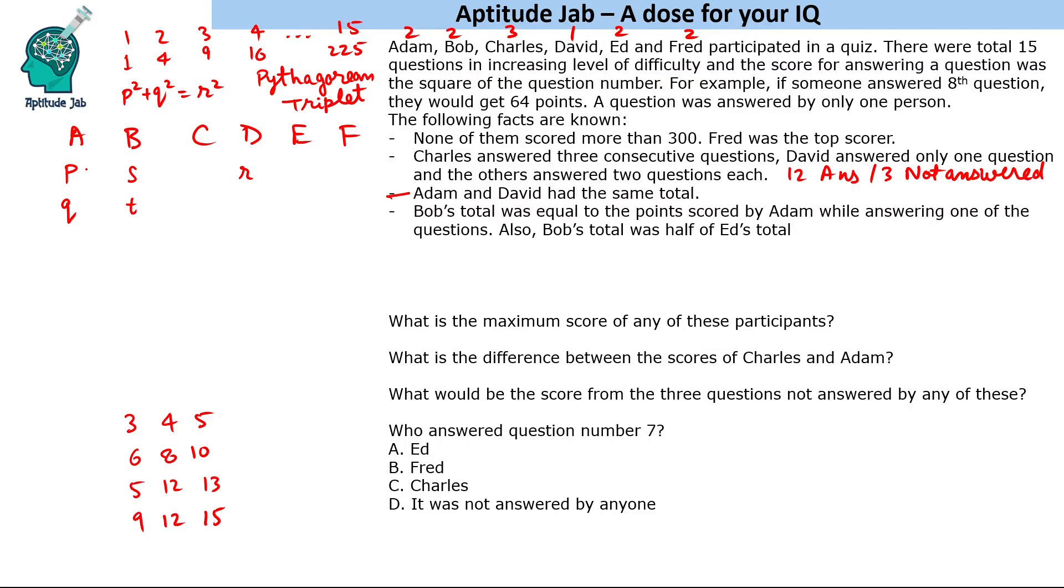So s² + t² = p², where p is one of the question numbers answered by Adam. These are the only Pythagorean triplets possible in this range. If you look at the Pythagorean triplets possible, there is only one value that fits.